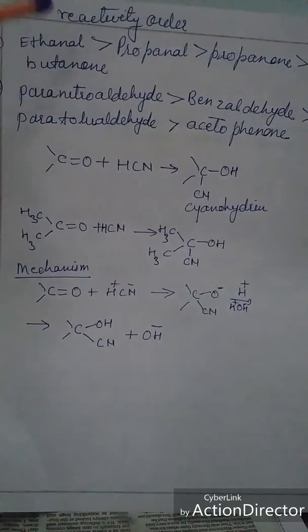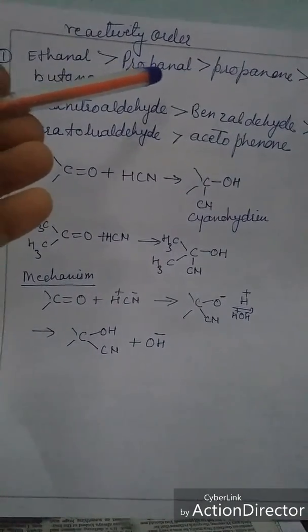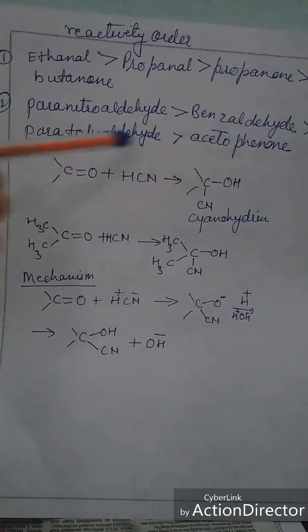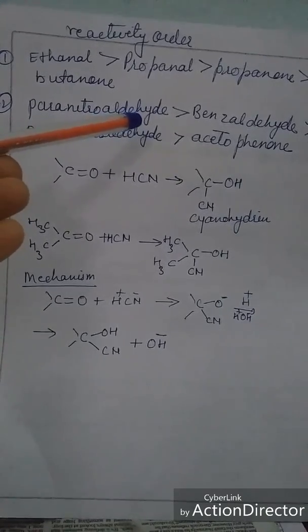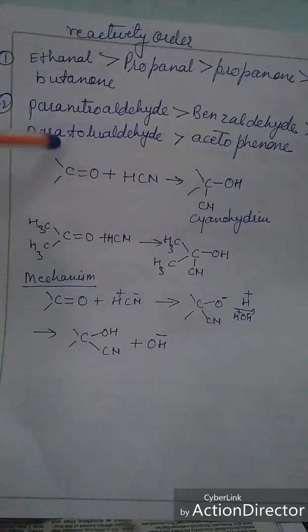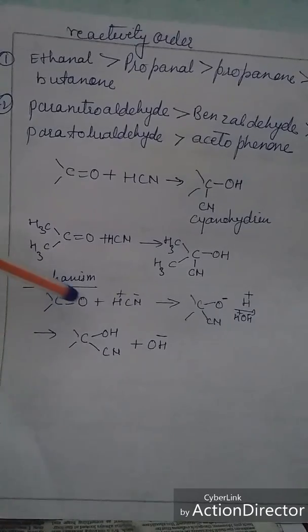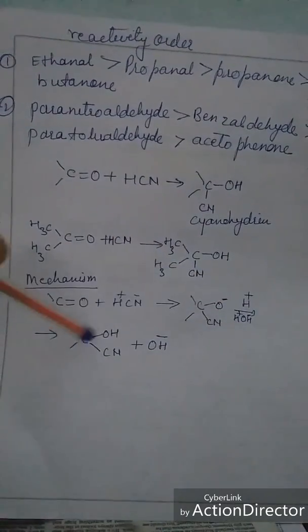The reactivity order is: ethanal > propanal > propanone > butanone, because as the number of alkyl groups increases, reactivity decreases. Among aromatic aldehydes, para-nitrobenzaldehyde is more reactive than benzaldehyde, then tolualdehyde, and acetophenone, since the reactivity depends on whether electron-withdrawing or electron-donating groups are present. Overall, when a carbonyl group reacts with HCN, you get a cyanohydrin via nucleophilic addition.